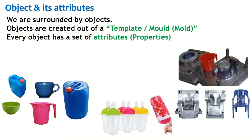Let's take an example of a plastic chair — you can see the mold and the plastic chair. We can create many plastic chairs using that particular mold, and all chairs manufactured by that mold will have the same attributes. So: we are surrounded by objects, most objects are created out of a mold or template, and every object has a set of attributes or properties.